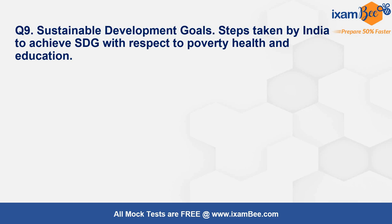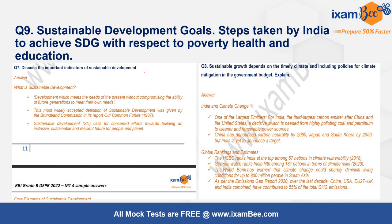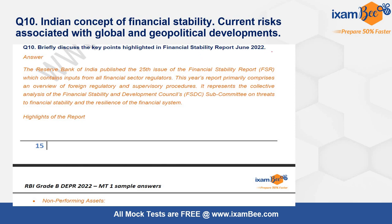The next question was on Sustainable Development Goals (SDGs) and what steps India has taken to achieve them with respect to poverty, health, and education. Two related questions from the mock exam covered the importance of sustainable development and how sustainable growth depends on timely climate-inclusive policies in the government budget. The final question was on India's concept of financial stability and current risks associated with global and geopolitical developments, which could be answered using points from the Financial Stability Report released in June 2022 — the fifth issue — highlighting non-performing assets and geopolitical developments.